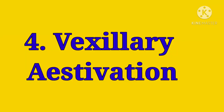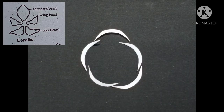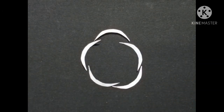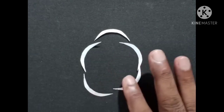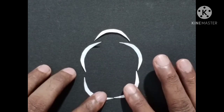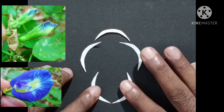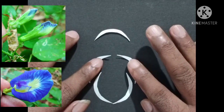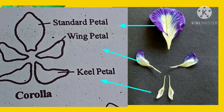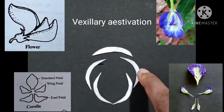The fourth is Vexillary Estivation. There are two small anterior petals called keel petals because they look like the keel of a boat. The lateral or wing petals overlap the keel petals. The standard petal overlaps the two lateral wing petals. This overlapping arrangement of standard petal covering wing petals, and wing petals covering keel petals, is called Vexillary Estivation.